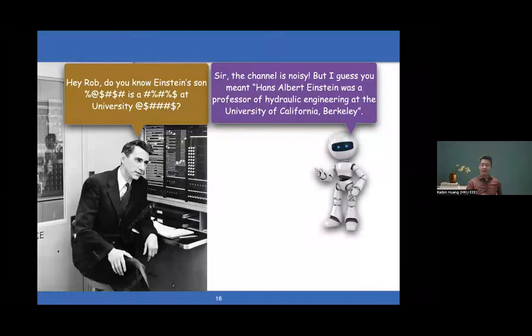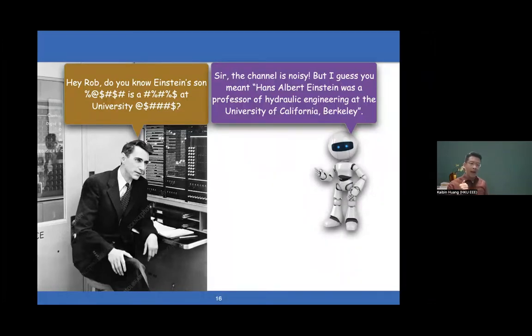Let's imagine this unreliable communication scenario: Shannon communicating with a robot. He'll say something like, 'Hey Rob, do you know Einstein's son, blah blah blah is a blah blah blah at university blah blah blah.' There are a lot of errors here. But the robot can actually correct all the errors. You can imagine the robot saying, 'The channel is noisy, but guess what you meant: Hans Albert Einstein was a professor of hydraulic engineering at the University of California, Berkeley.' Why can the robot correct errors? Not because of Shannon coding. Just because it has access to a knowledge base. It can use keywords to look up information and do semantic corrections.